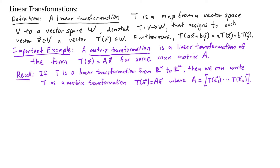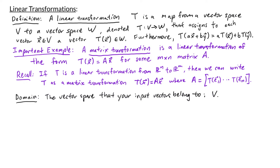Let's go over some key terms that are relevant to linear transformations. Remember that the domain of a linear transformation is the vector space that your inputs belong to. If your linear transformation is from V to W, then we say that the domain is V. In the case where we have a matrix transformation and A is an M by N matrix, then your domain is Rn.